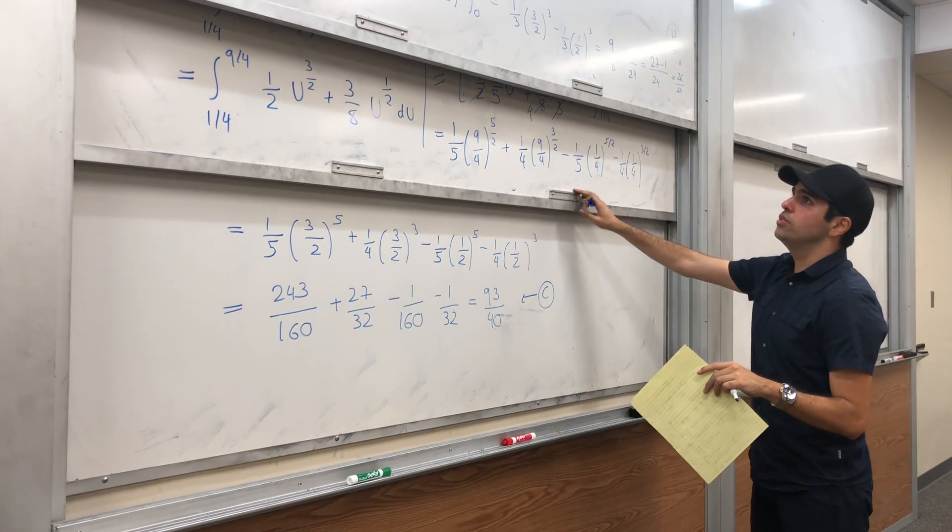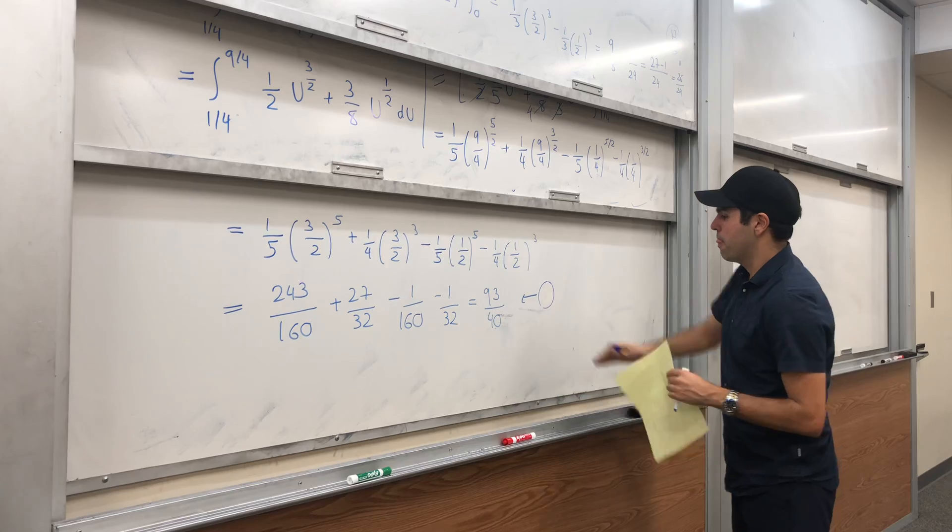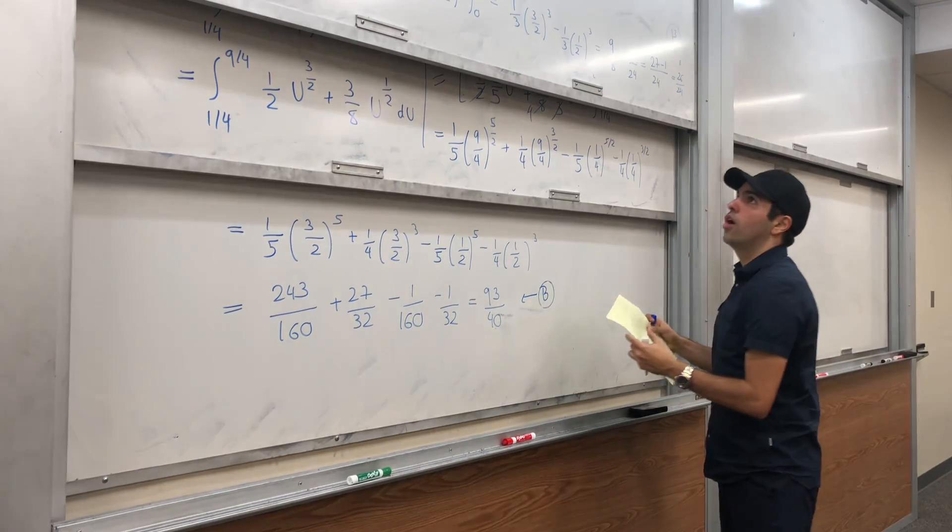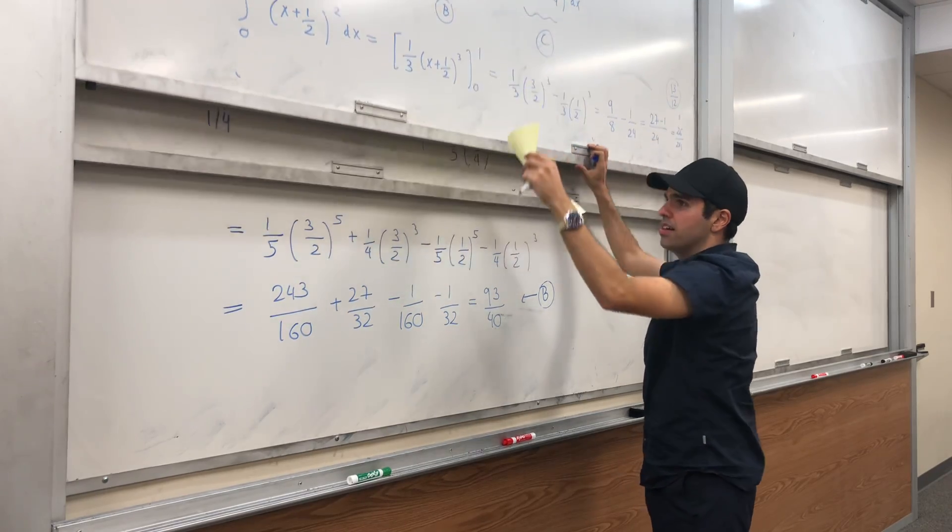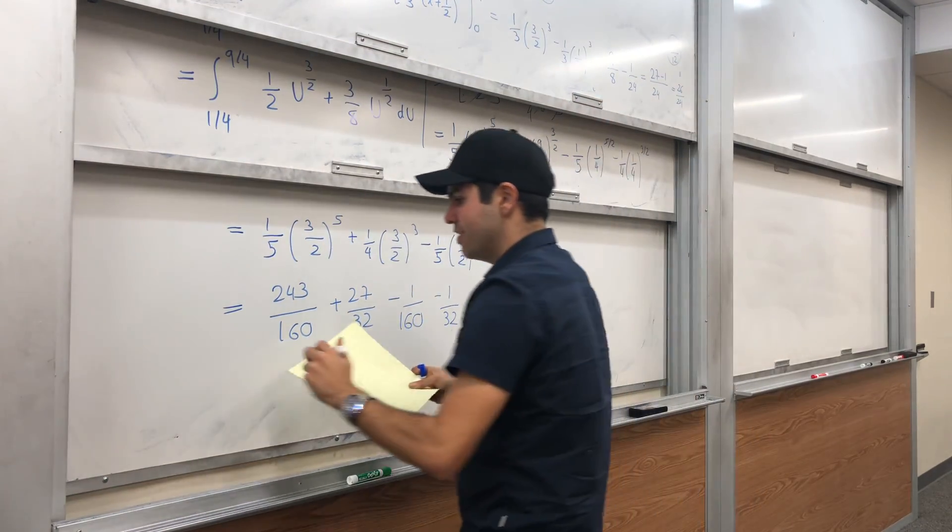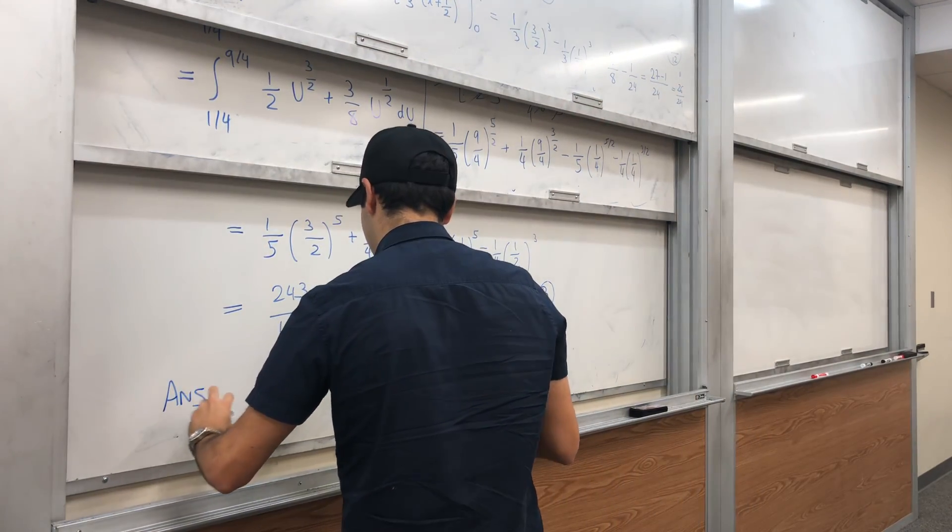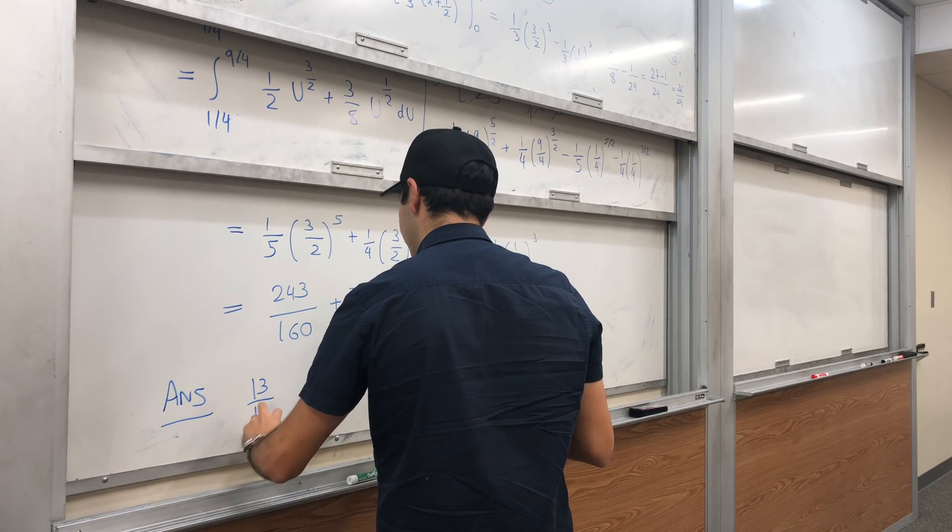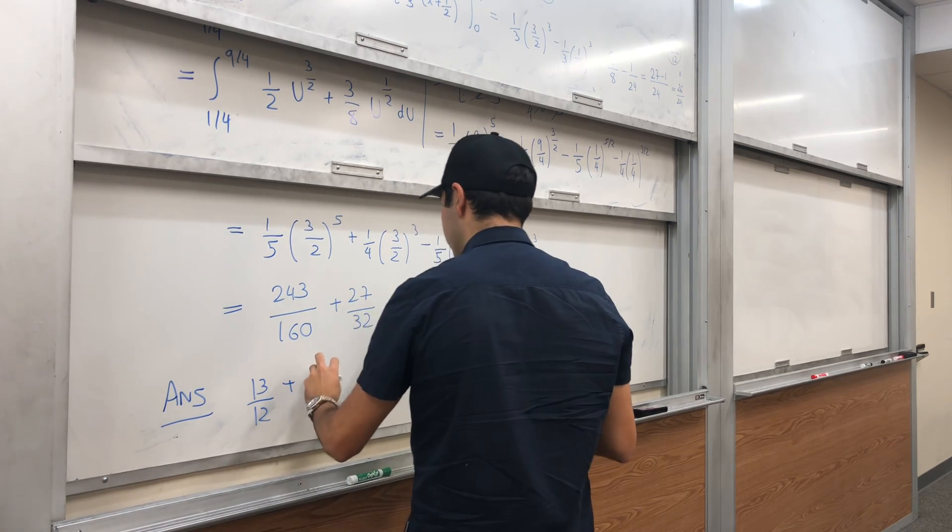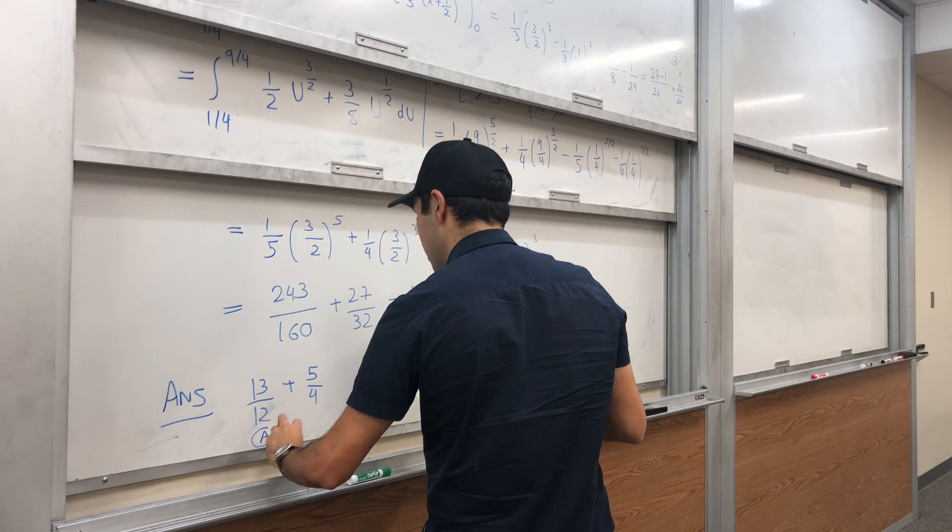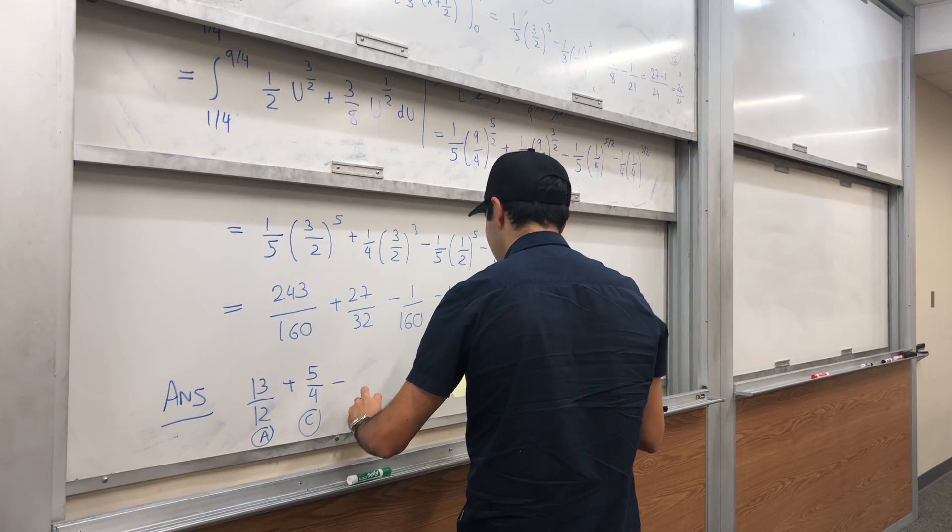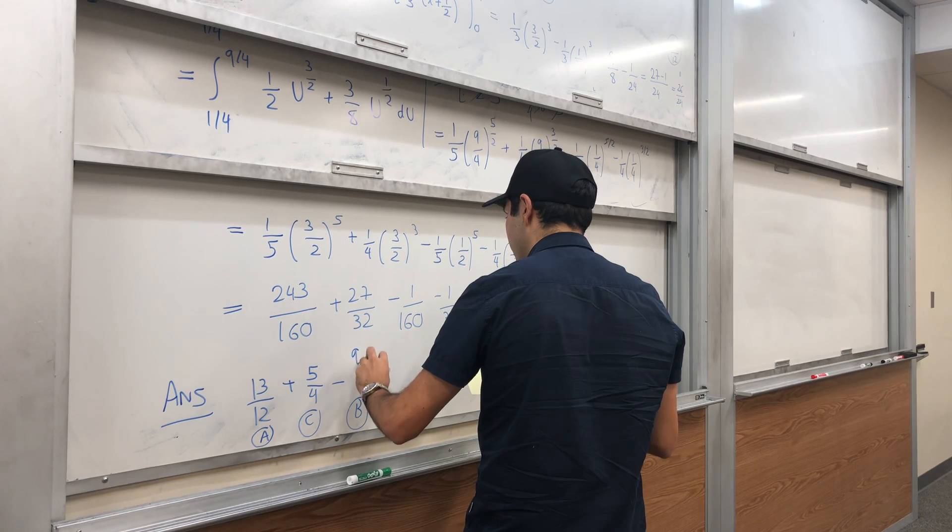And then all we need to do—sorry, that was our B. So all we need to do is just A minus B plus C, which becomes the following: 13/12, that's A; plus 5/4, that is C; and then minus B, 93/40.